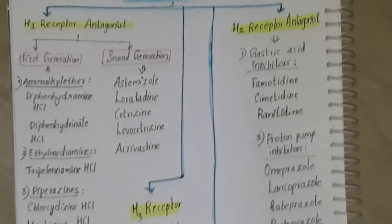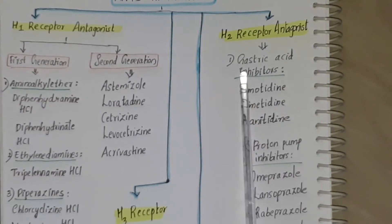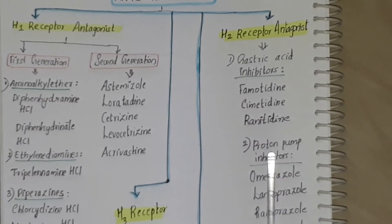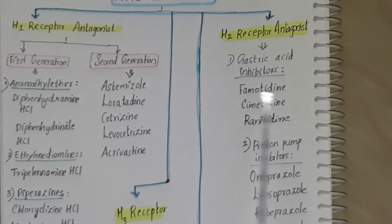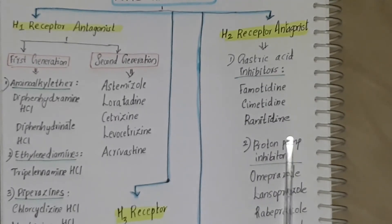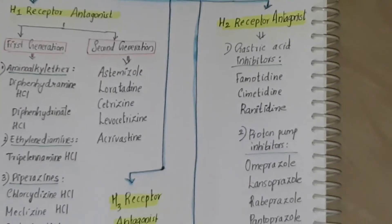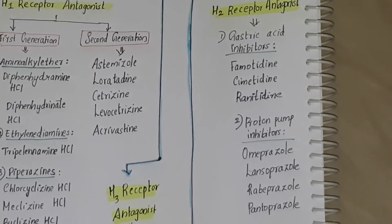The H2 receptor antagonists are classified as gastric acid inhibitors and proton pump inhibitors. The gastric acid inhibitors are famotidine, cimetidine, and ranotidine. The proton pump inhibitors are omiprozole, lantoprozole, rabiprozole, and pantoprozole.